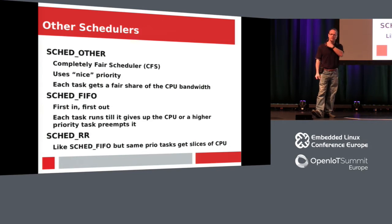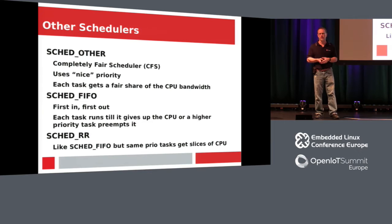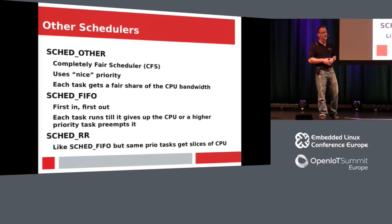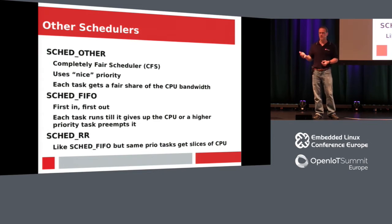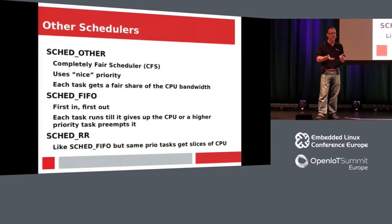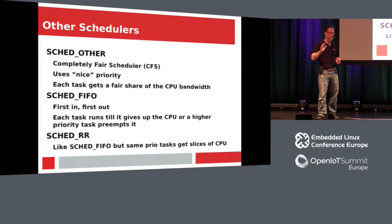Your processes in SCHED_OTHER are modified by a nice variable. Everyone knows the Unix nice command. The nicer you are, the more CPU you give up. So a higher nice value means lower priority. You could use that for a batch job where you don't care about speed. But if you have something interactive, you want it to have higher priority.